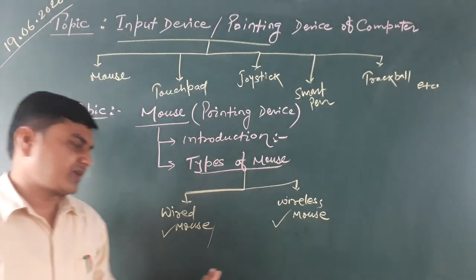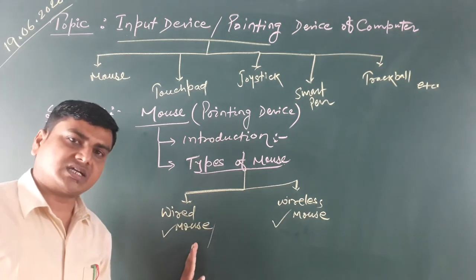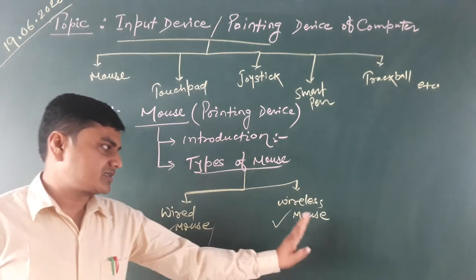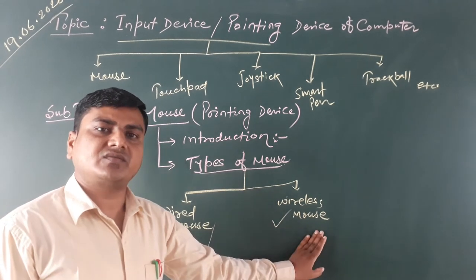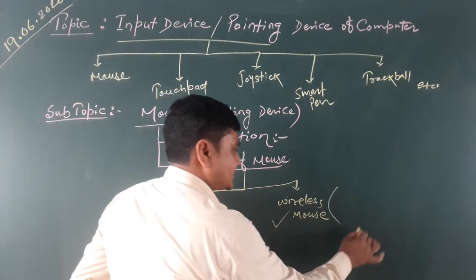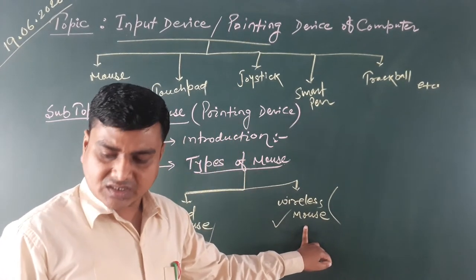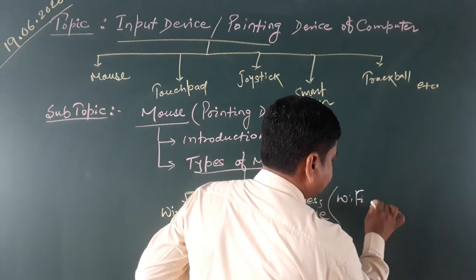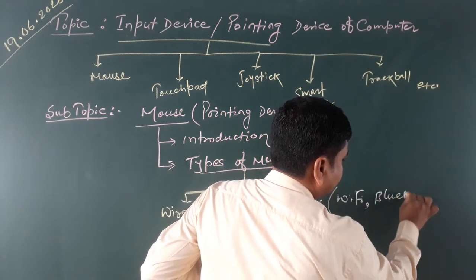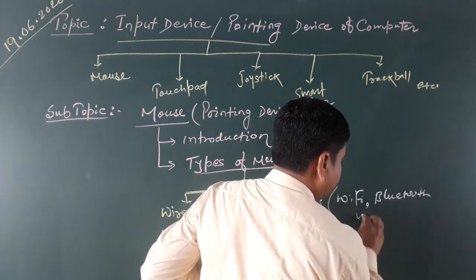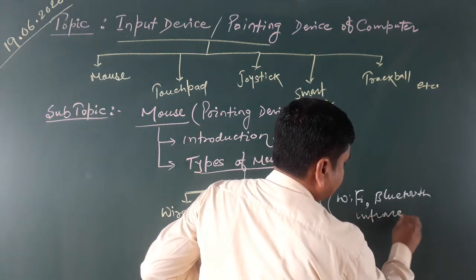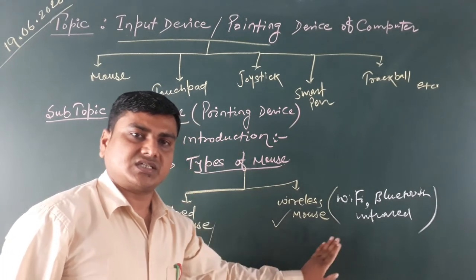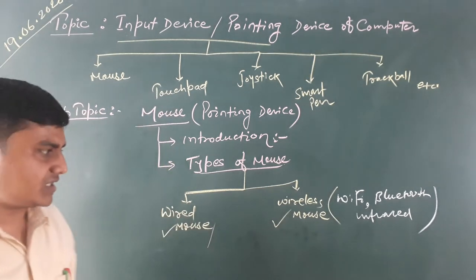Wired mouse connect to the computer using a wire, while wireless mouse connect without any wire. The technologies used in wireless mouse to connect to the computer include Wi-Fi, Bluetooth, infrared, and others. These are the different wireless technologies through which wireless mouse connect to the computer.